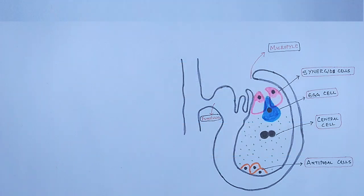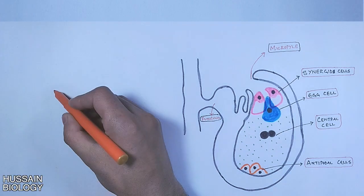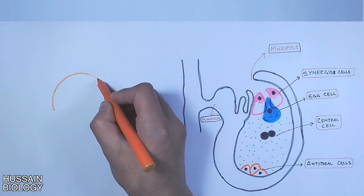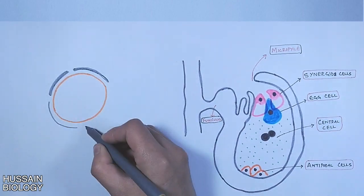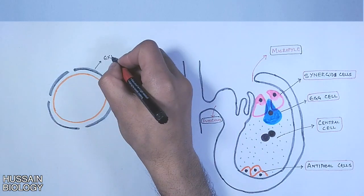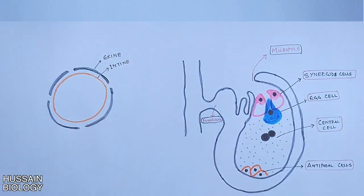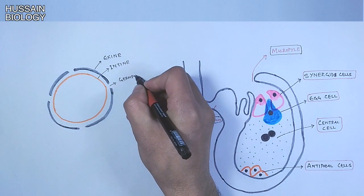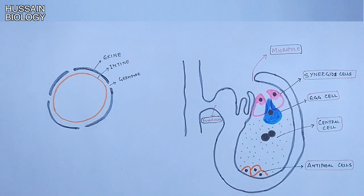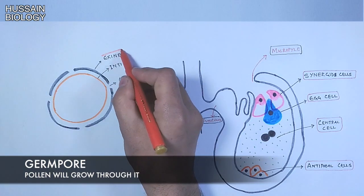Now let's look at the structure of pollen and the cells present within it. The pollen is a two-wall structure — it has one internal wall and one external wall. The internal wall is called the intine and the external wall is called the exine. The gaps or pores in the exine are the germ pores, from where the pollen tube will grow out.